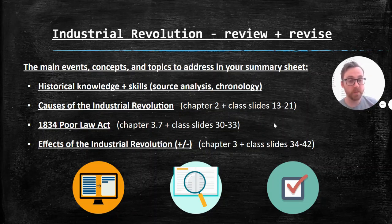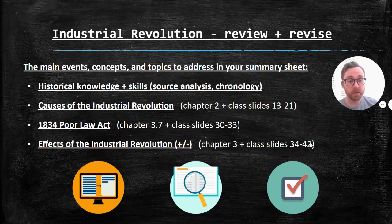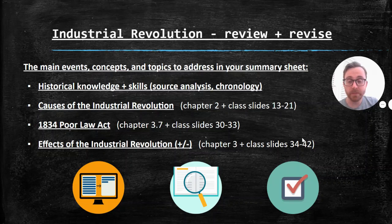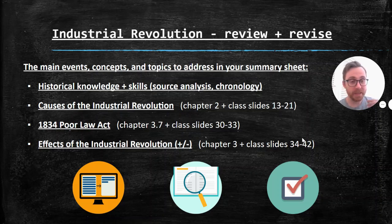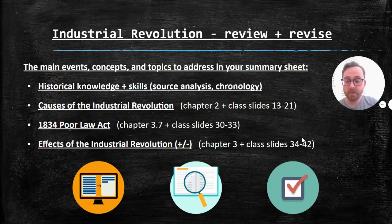So all you really need to do this lesson is use this checklist, find yourself a blank piece of paper, dust off your pen or your pencil, crayon, paintbrush, whatever you're using to write. You just need to make one page, one single-sided page, A4 piece of paper of summary notes, basically.